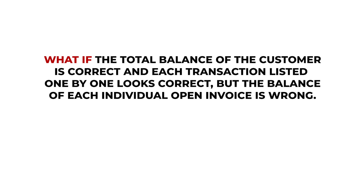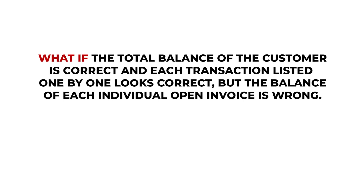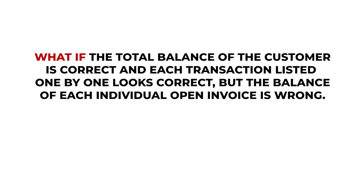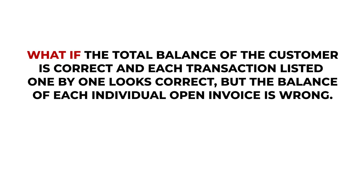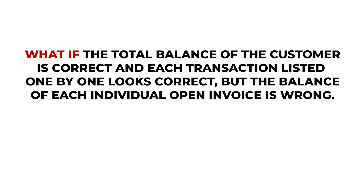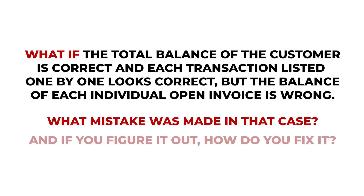Now that's the main idea. And this common sense procedure will fix every single customer-related mistake except one. What if the total balance of the customer is correct and each transaction listed one by one looks correct, but the balance of each individual open invoice is wrong? What mistake was made in that case, and if you figure it out, how do you fix it?